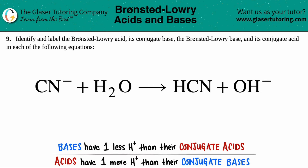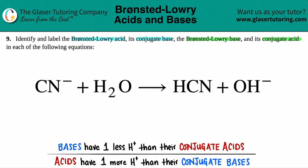Number 9. Identify and label the Bronsted-Lowry acid, its conjugate base, and then identify the Bronsted-Lowry base and its conjugate acid in each of the following equations. We have our equation here: CN⁻ plus H₂O yields HCN plus OH⁻, and we need to find these four things.